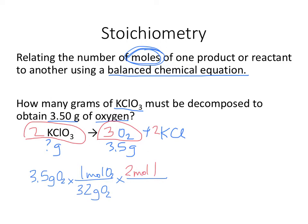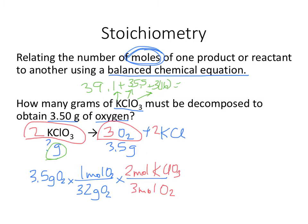The conversion factor is 2 moles of KClO3 for every 3 moles of oxygen. That's how you relate moles of one product or reactant to another. The question is asking for grams of KClO3, so I need the molar mass of KClO3: K is 39.1, plus Cl is 35.5, plus oxygen is 3 times 16 equals 48. Adding that all up gives 122.6 grams per mole. So 1 mole of KClO3 has a mass of 122.6 grams. Now I can finally solve.